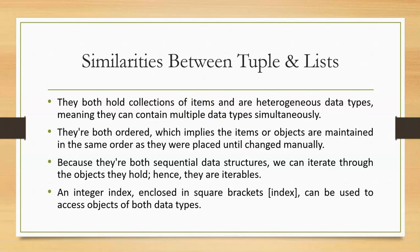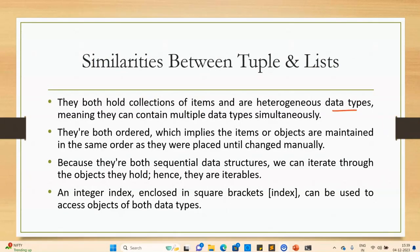Now the similarities: both list and tuple hold heterogeneous data types — meaning you can use numeric values, strings, and multiple data types inside both a list and a tuple. They are both in an ordered form, so the order must be maintained. They are both sequential data structures, meaning you can iterate through the objects they hold — going from index one to index two, for example.